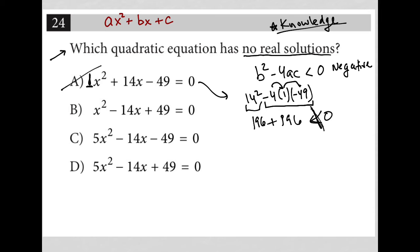How about choice B? Well, that would be negative 14 squared, which is still going to be the same 196, minus 4 times 1 times positive 49 this time. So here we'd have positive 196, here we'd have a negative 196, and we'd have equal zero, right? So that's also not less than zero. So B is gone.